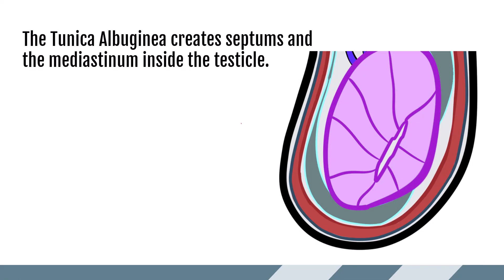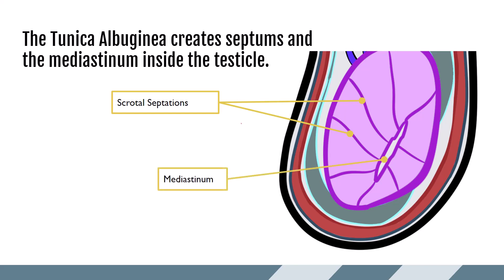Let's take a closer look at the testicle itself. The tunica albuginea is a dense fibrous tissue, and it extends into the testicle forming scrotal septations. These scrotal septations are not seen by ultrasound, but they converge together to form the mediastinum, which can be seen.